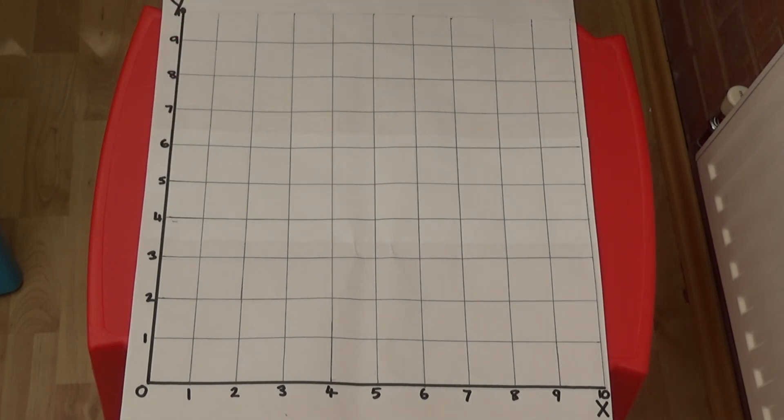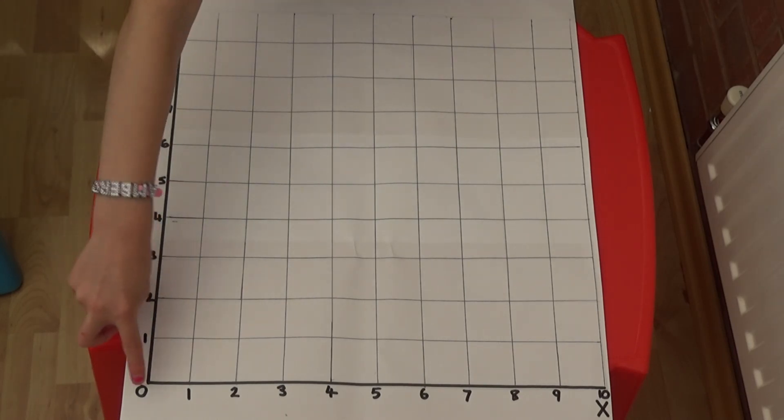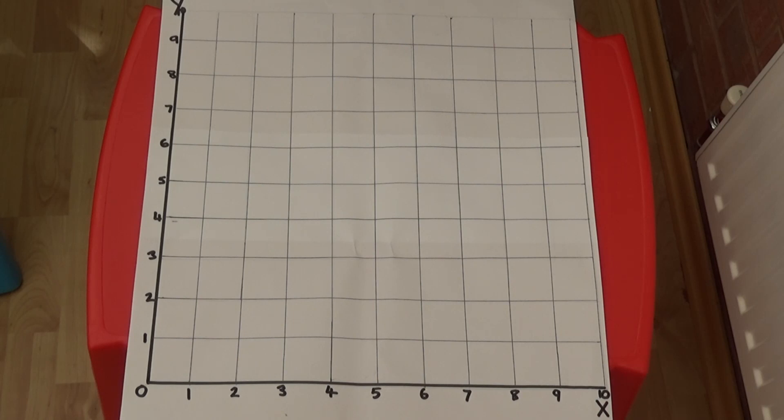I've numbered my x and y-axis from 0 to 10 with both the x and the y-axis starting at the same point. If you look at my numbers each one is written on the line and not in between two lines.